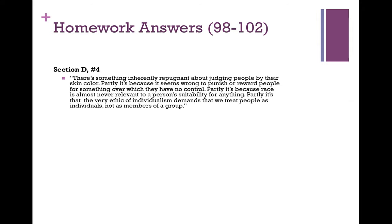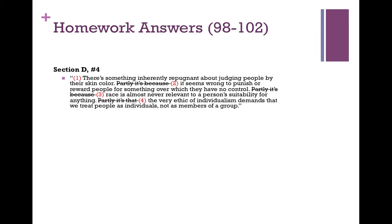Then we come to the final section, section D. Here again, you are asked to distill, put in premise-conclusion form, and then diagram. These arguments were more complicated with each successive set of problems. Here's the argument: there's something inherently repugnant about judging people by the color of their skin. Partly, it's because it seems wrong to punish or reward people for something over which they have no control. Partially, it's because race is almost never relevant to a person's suitability for anything. Partly, it's that the very ethic of individualism demands that we treat people as individuals, not as members of a group. Hopefully you were able to identify the different propositions and notice that we can rule out certain words that aren't essential, though those words are important for identifying what is a premise.